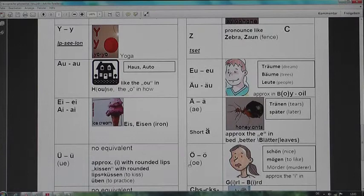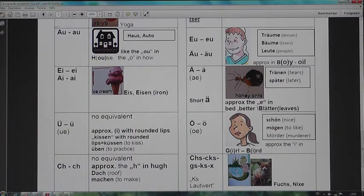Some diphthongs and consonant blends. Au, like the au in house, the au in now, the word Haus, auto. Äu, different spellings, same pronunciation, in the words Träume, dreams, Bäume, trees, Leute, people. Ai sound, different spelling, same pronunciation, in a word like ice, Eisen, iron.